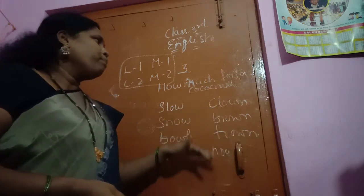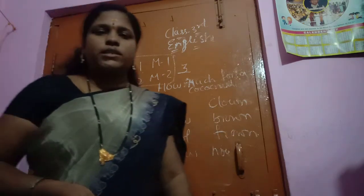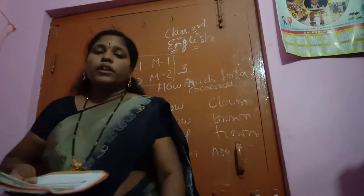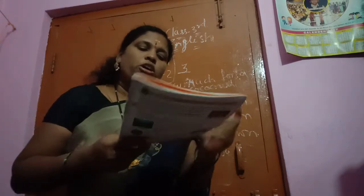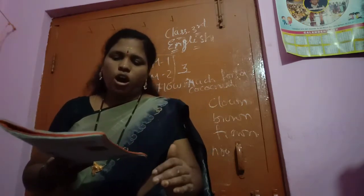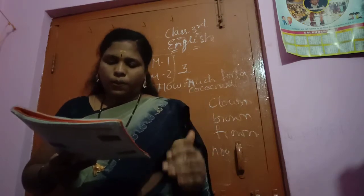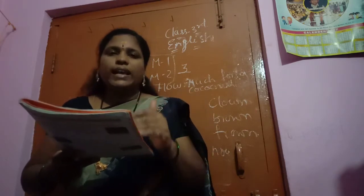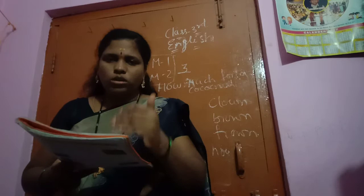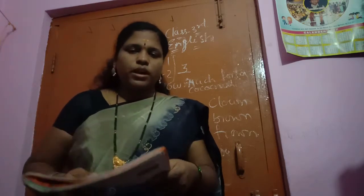These are the listen and say aloud words. You also read after me. Once again I am reading, children: Slow, Snow, Ball, Crow, Clown, Brown, Frown, Now. Understood children?